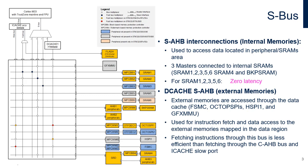SRAM1, SRAM2, SRAM3, SRAM5 and SRAM6 are accessible on the SAHB bus with a continuous mapping. Accesses to external memories connected to FSMC, OctoPSPIs, HSPI1 and GFX MMU controllers are done through the D-cache even though requests are marked as non-cacheable. These accesses can be data requests as well as instruction requests mapped in the external data region of the mapping.